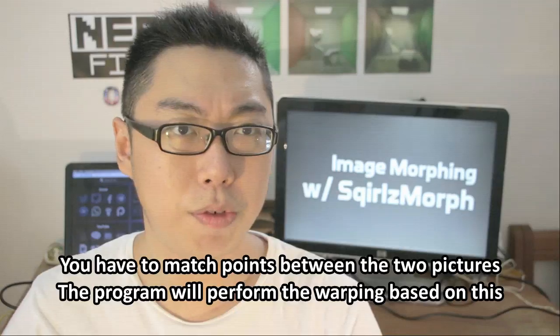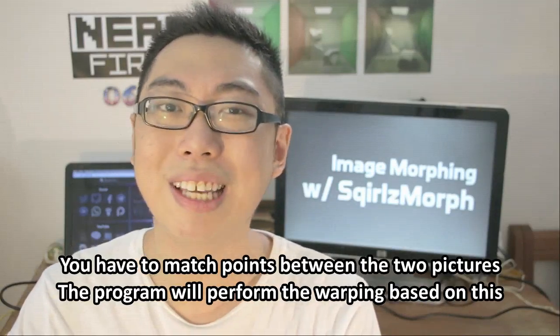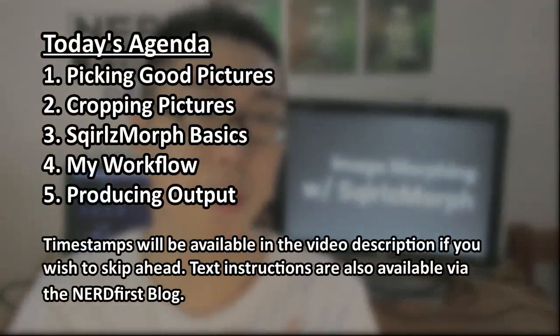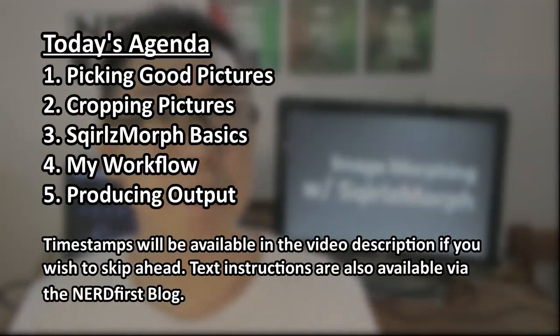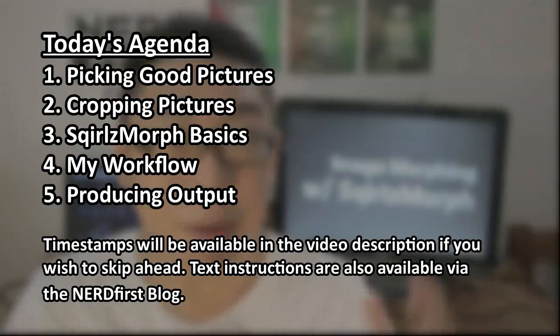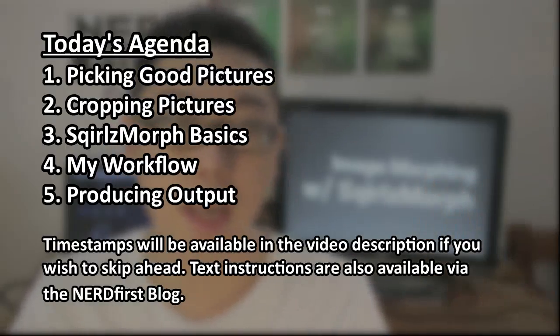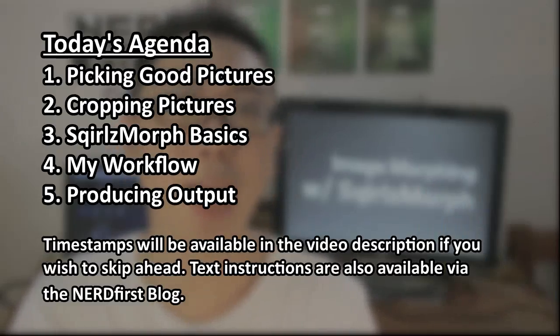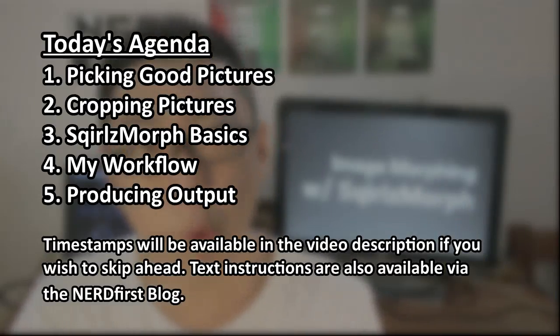The way you use this program is extremely simple. You just need to mark out where points on one image correspond to points on the other image. And in fact, with just a few points, you can get a pretty realistic looking morph from one image to the other. My goal today is more or less just to show you where all the buttons are on the program, as well as some tips on where the best places to put the points. I'll show you my whole workflow so that you can actually get started and get moving quite quickly. With that in mind, let us jump into our steps.